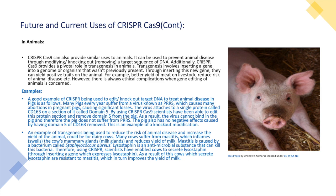Additionally, CRISPR-Cas9 provides a pivotal role in transgenesis in animals. Transgenesis involves inserting a gene into a genome of an organism that was not previously present, which can yield positive traits on the animal — for example, better yield of meat on livestock and reduced risk of animal disease.